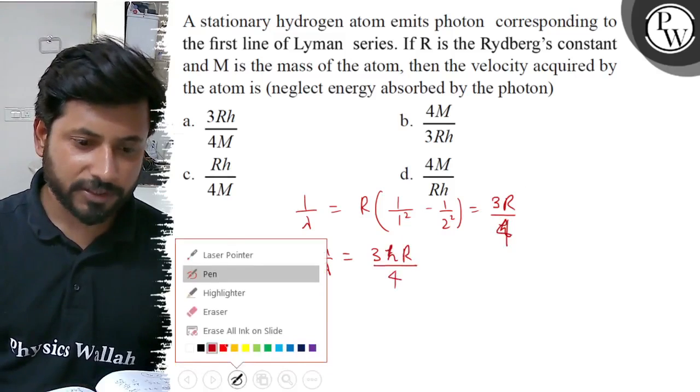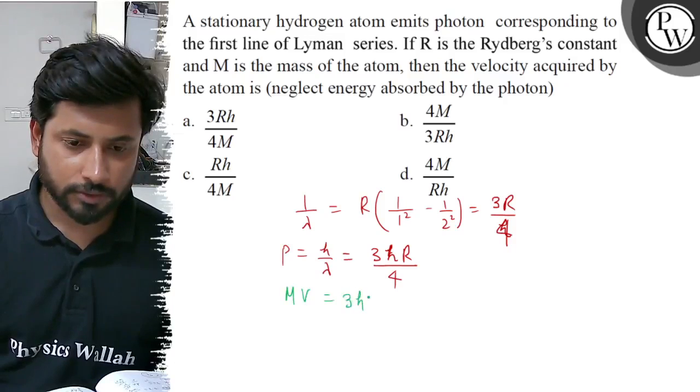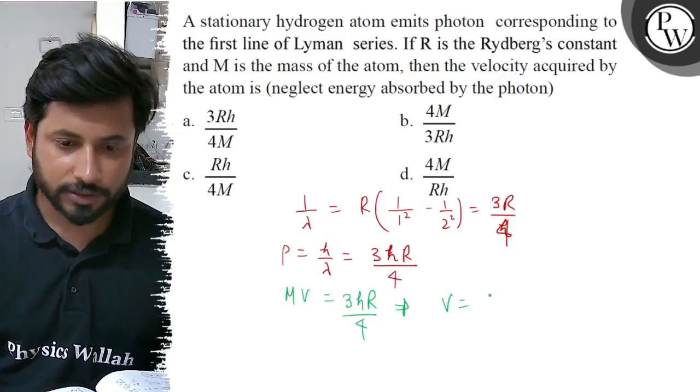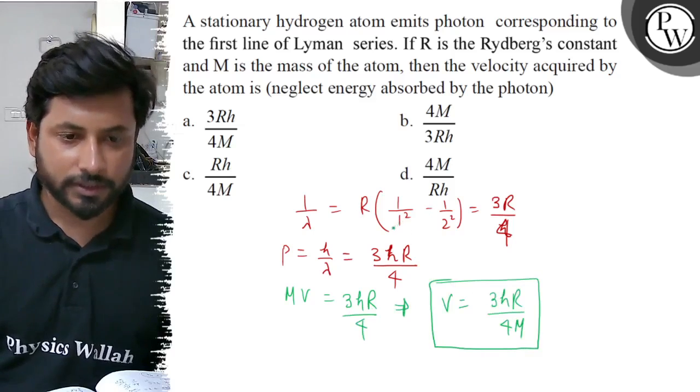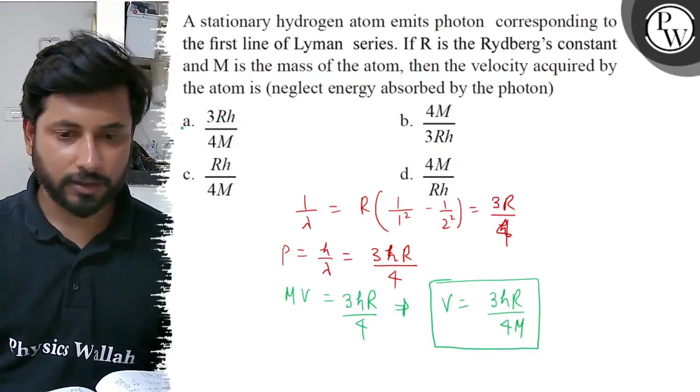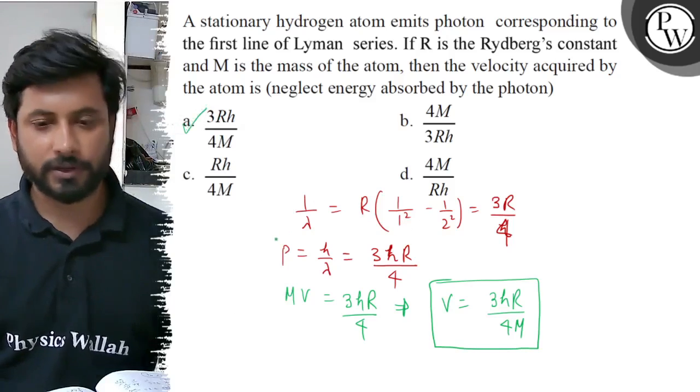Now we can use mass into velocity. Mass into velocity equals to 3hR by 4. So velocity is 3hR by 4M. So final answer is 3hR by 4M, that is option number A. Option A is the correct answer.